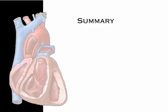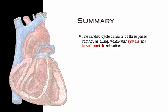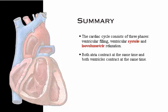Here's a summary of what we've covered. The cardiac cycle has three phases: ventricular filling, ventricular systole, and isovolumetric relaxation. Both atria contract at the same time, and both ventricles contract at the same time. Blood flow is controlled by pressure changes.